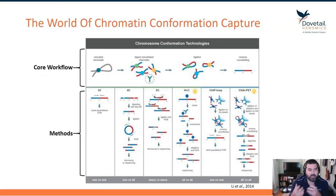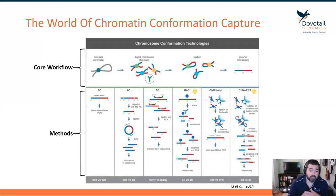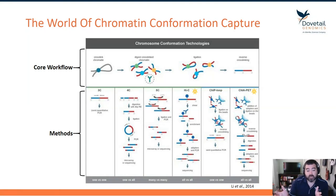How do we capture that information? It's through the world of chromatin conformation capture. The core workflow of chromatin conformation capture — known as 3C — has been around for a long time. There are many offshoots from that core workflow, but the core workflow is pretty stable throughout all the different flavors.